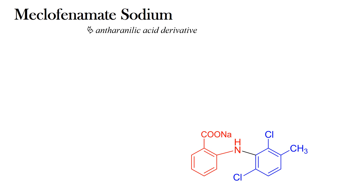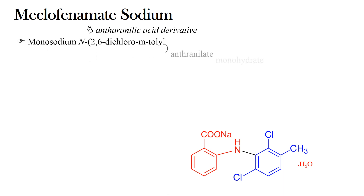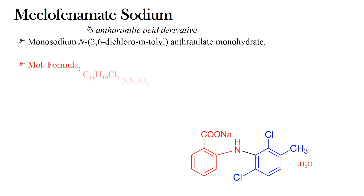Meclofenamate sodium occurs in hydrated form and the chemical name of the compound is monosodium N-2,6-dichloro-meta-toluoyl. The molecular formula of meclofenamate sodium is C14, H10, Cl2, N, Na, O2 · H2O.